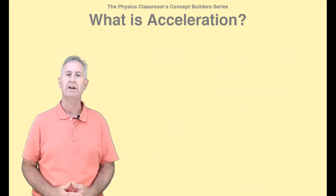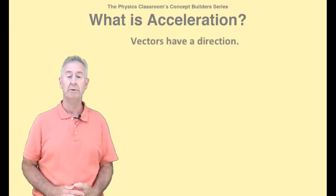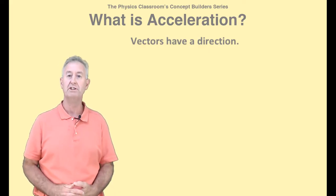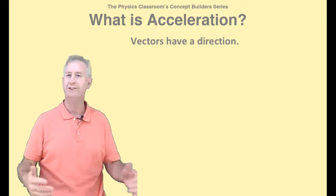Acceleration is a vector. It has a magnitude, or numerical value, and a direction. The numerical value can be determined using the equations we just discussed. The direction of the acceleration is described by words such as upward or downward, eastward, rightward, leftward, northward, etc.